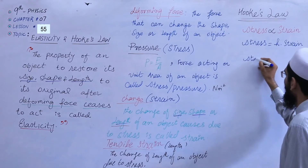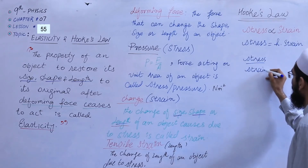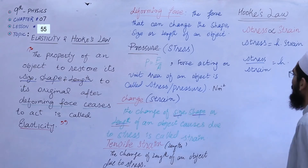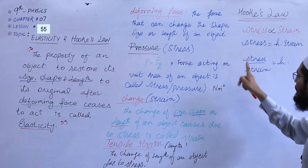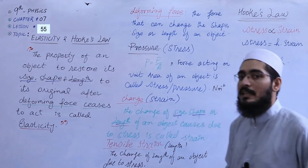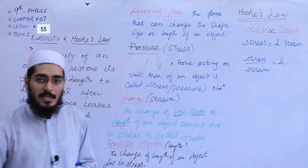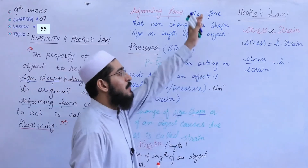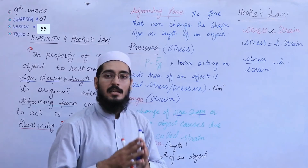We have to write the formula for stress. Stress over strain is equal to a constant h. So this is Hooke's Law. From this, you can also describe a second definition: the ratio between stress and strain is called Hooke's Law. So students, you have two different types of definitions, and both are correct. This is Hooke's Law.